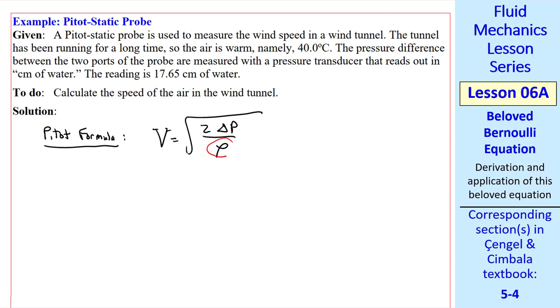We have two different densities. This density is the density of the flowing fluid, which is air. So this density is ρ air. At 40 degrees C, you can look up the density of air. Or if I had given a pressure, you could calculate it using the ideal gas law. But what is ΔP?